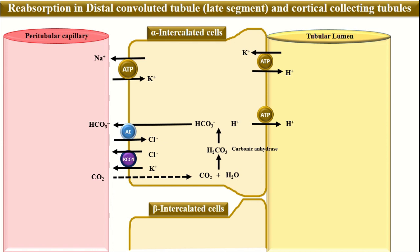Within the tubular cells, we have an important amino acid called glutamine. Ammonia is secreted into the tubular lumen where it combines with hydrogen ions to form ammonium, which is then excreted in the urine.